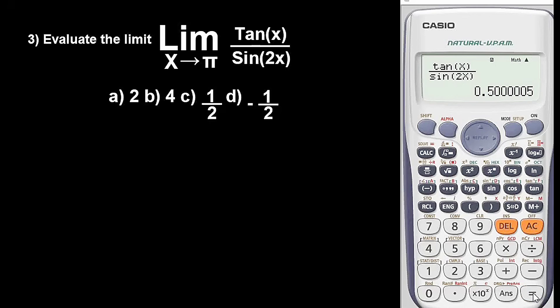We get 0.5, and 0.5 is the same as 1 over 2. So our answer to this question is option C, which is 1 over 2. This is basically how you solve limits of a function tending to a real number with a Casio calculator. Just add 0.001 to wherever the limit is tending to and substitute it into the expression.